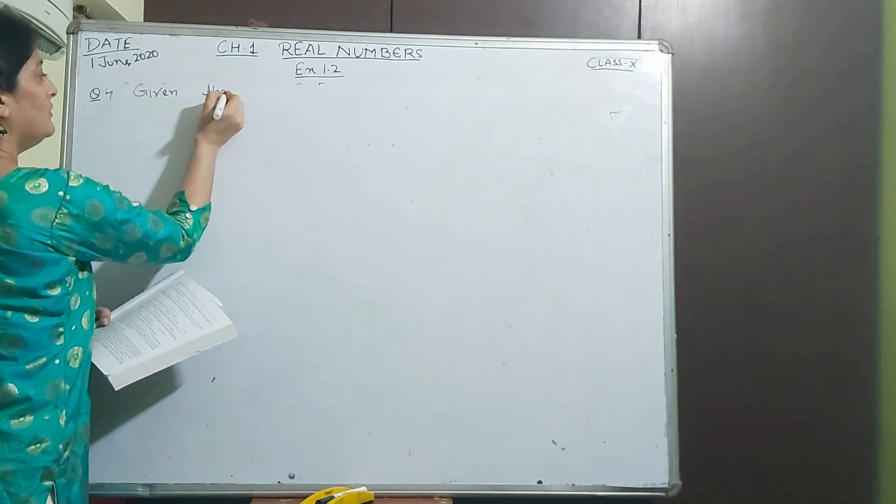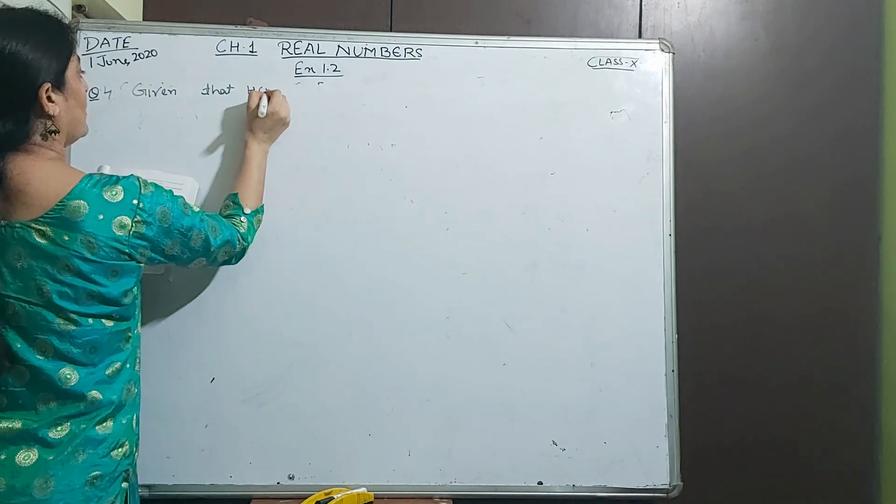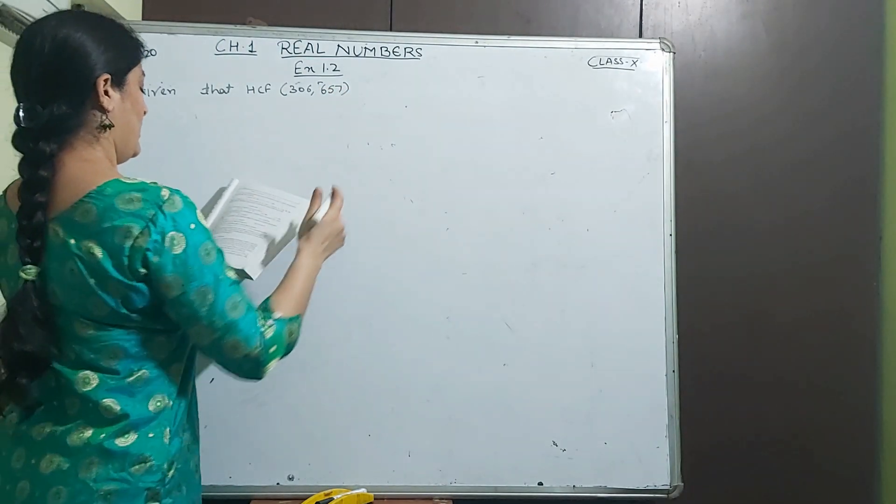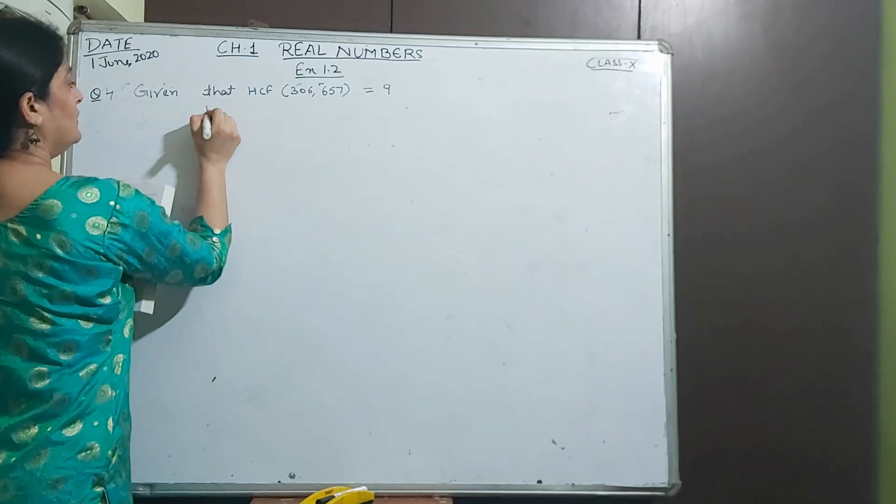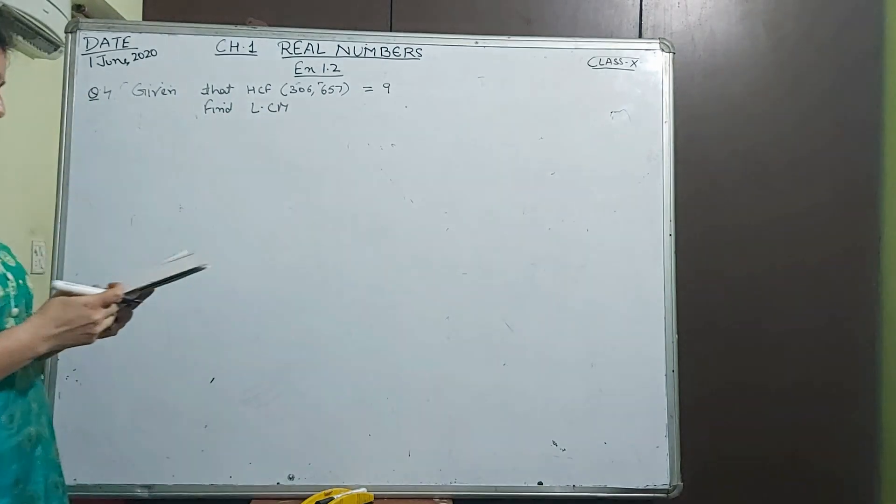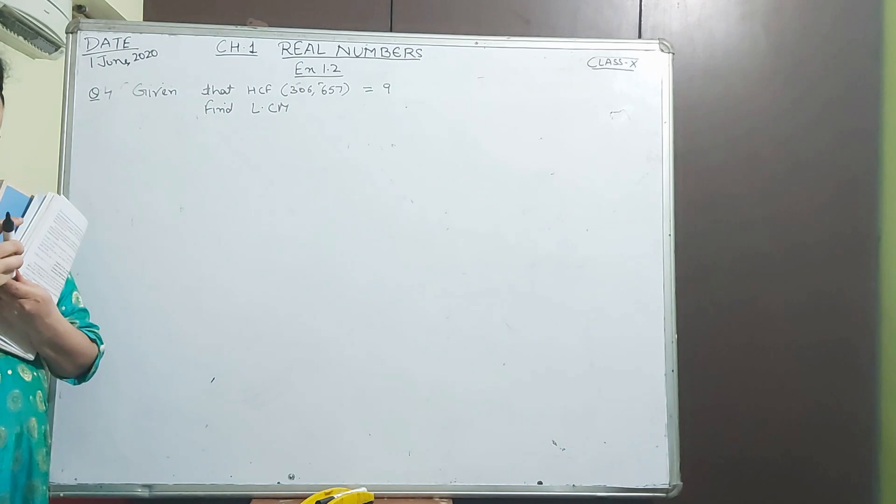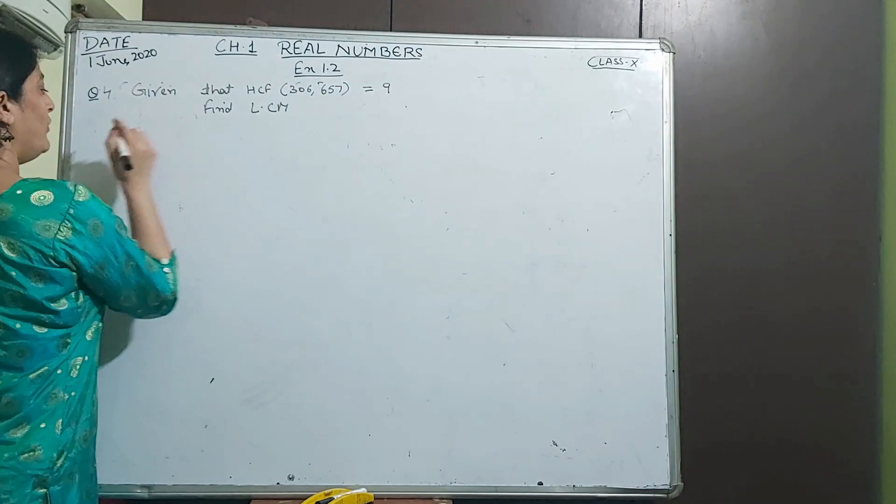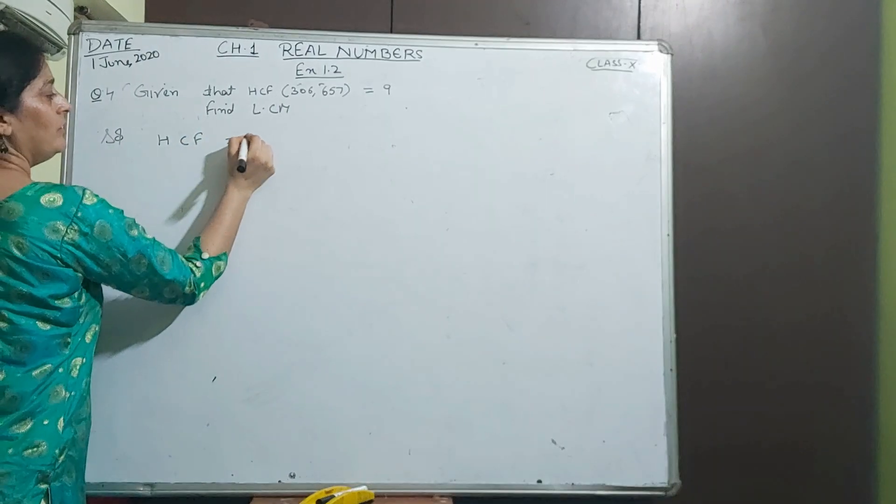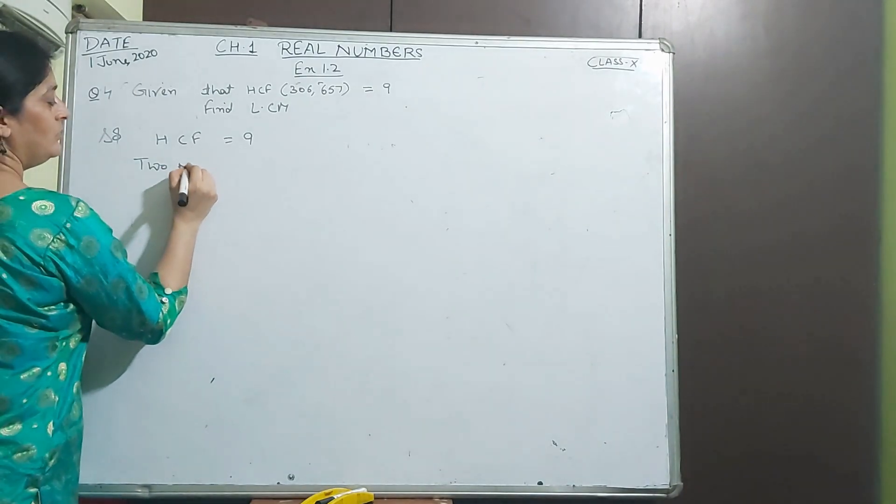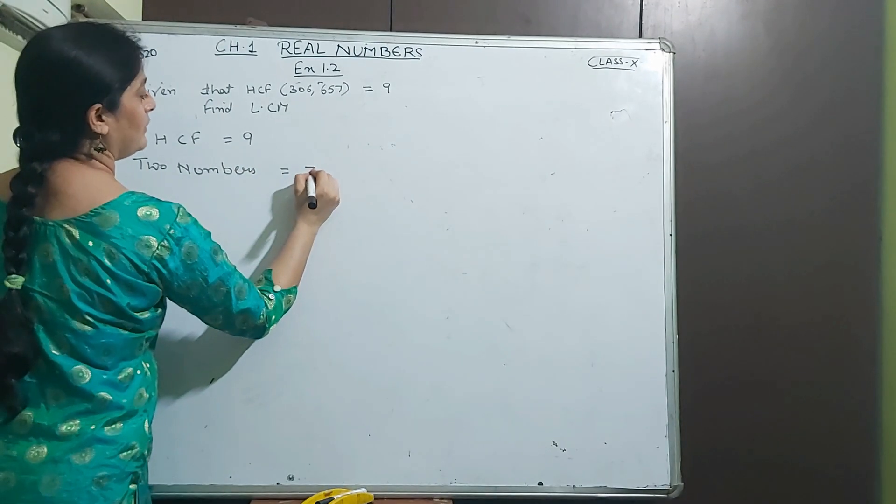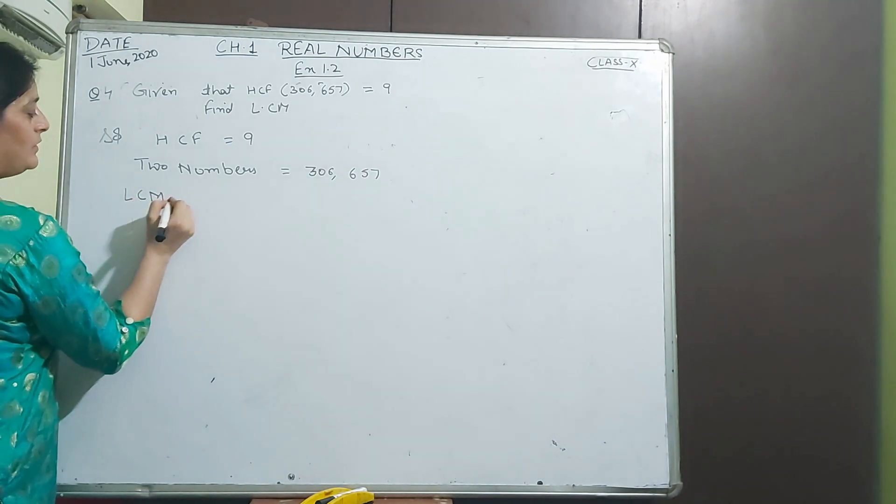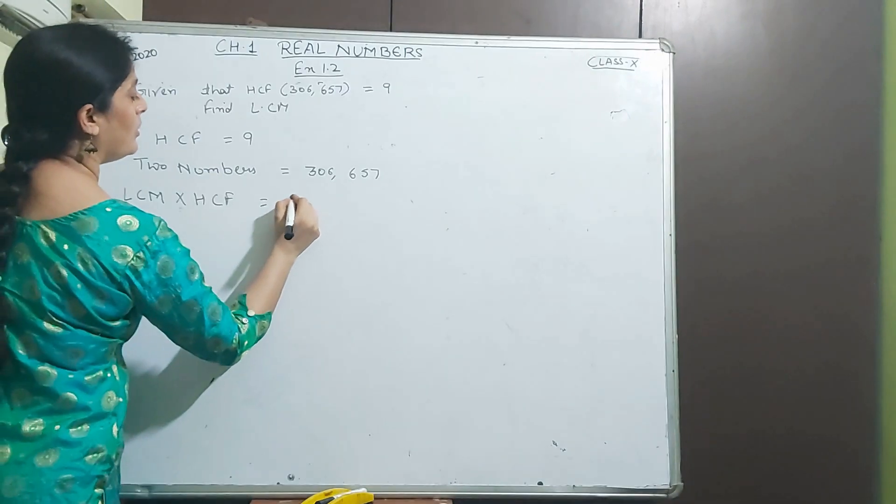In question 2 we applied HCF into LCM equals product of two numbers. The same formula we apply here to find LCM. Here HCF is given as 9. Two numbers are also given: 306 and 657. Now we have to find the LCM. Formula is LCM into HCF equals product of two numbers.